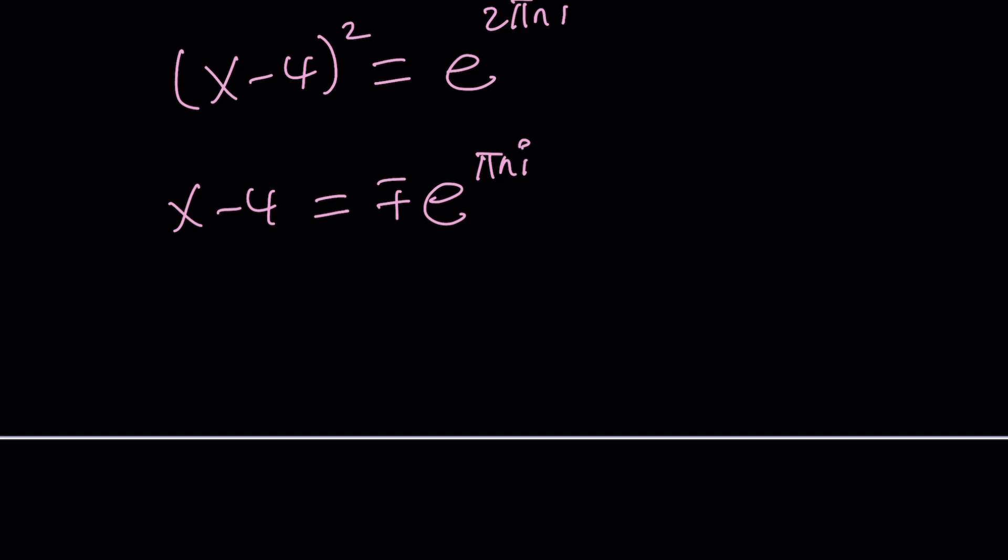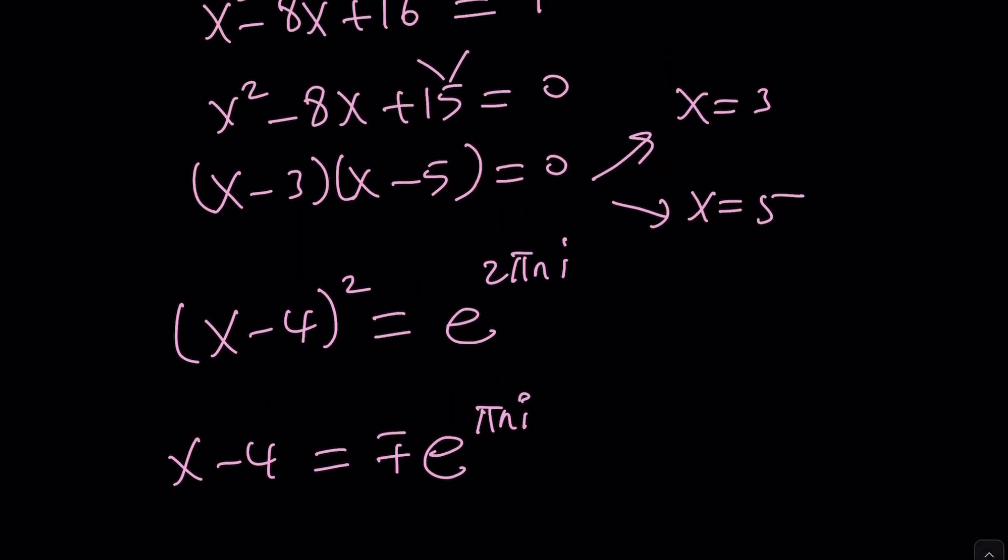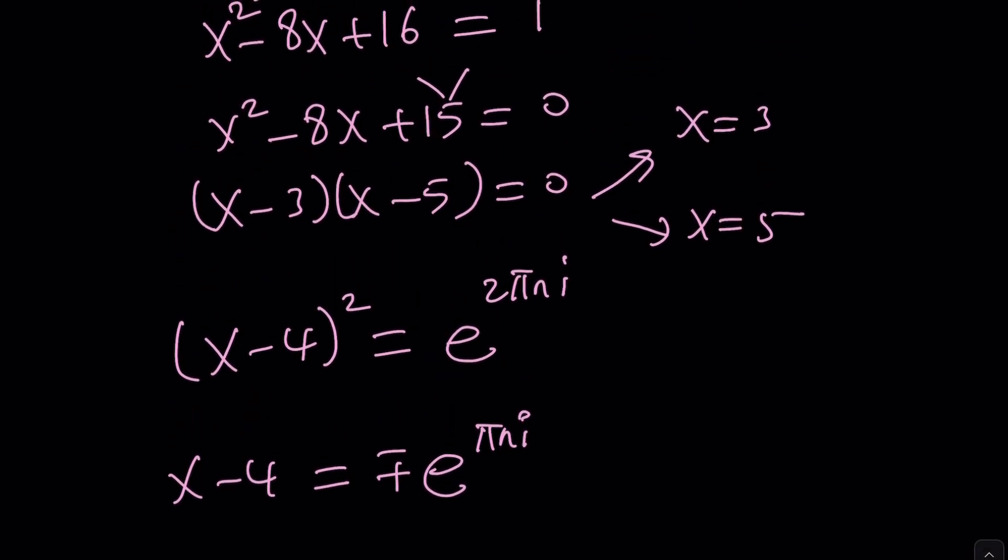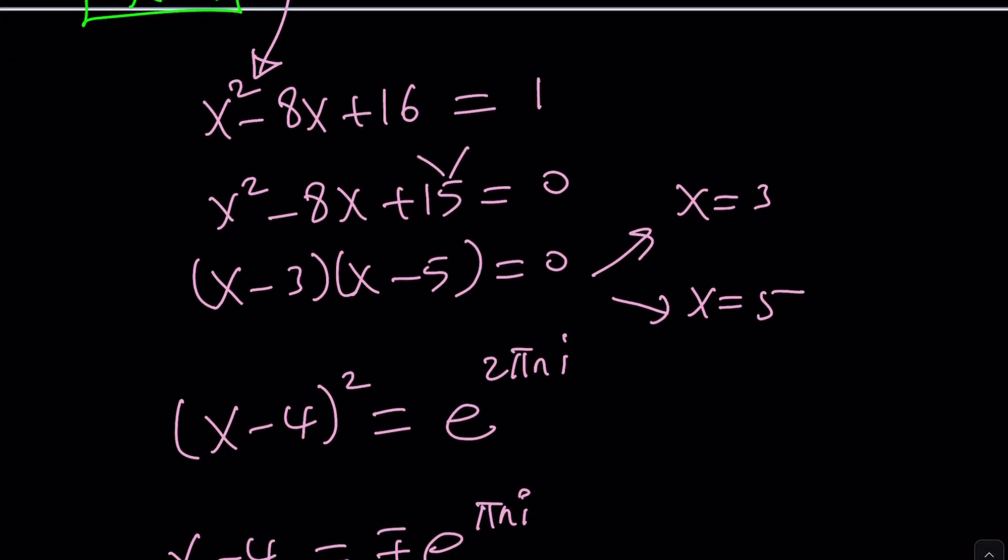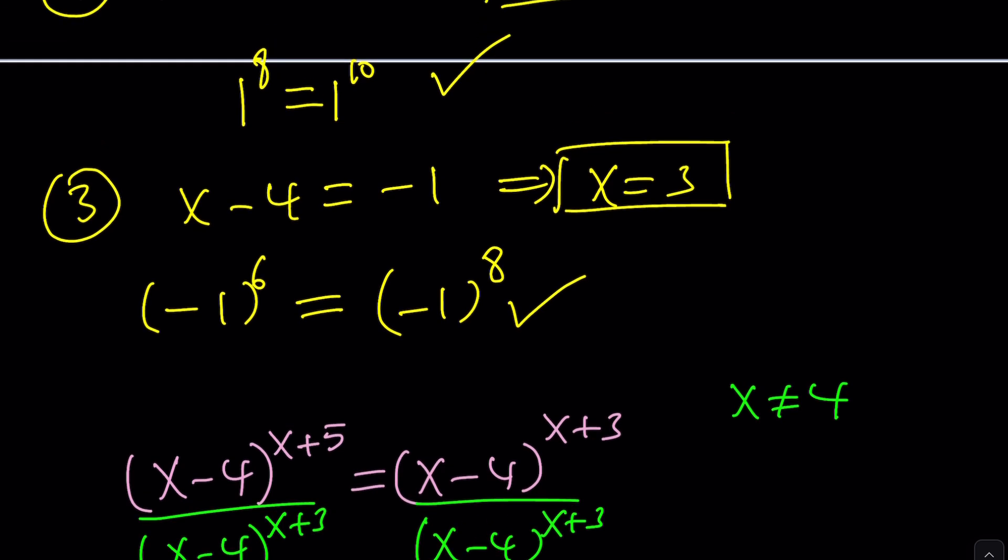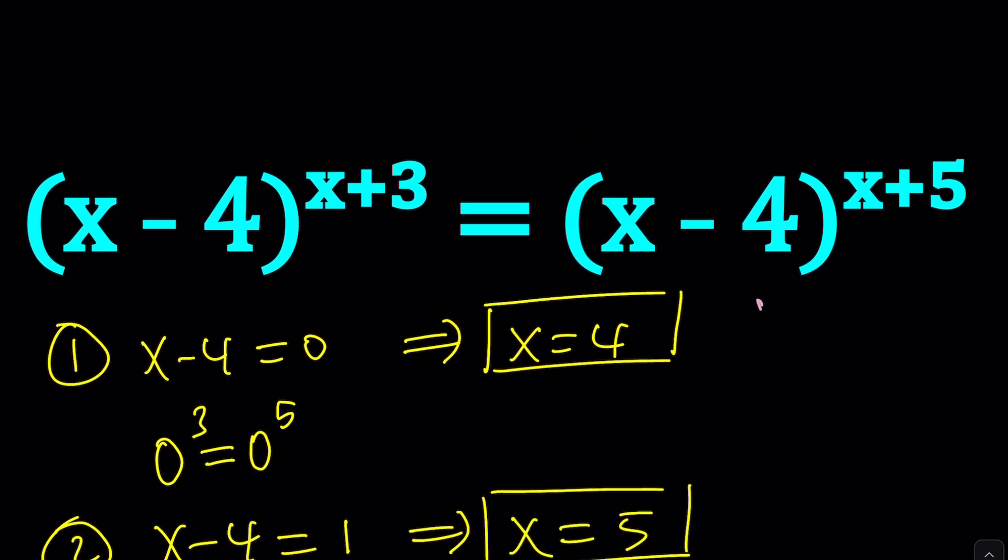Now, what would happen if n is equal to 0, you would get 1, if n is equal to 1, you would get negative 1, and again, this would not give you any solutions besides the ones you found, because that's it, this is a quadratic, you can only get two solutions. So, we have a total of three solutions, which is 3, 4, and 5.